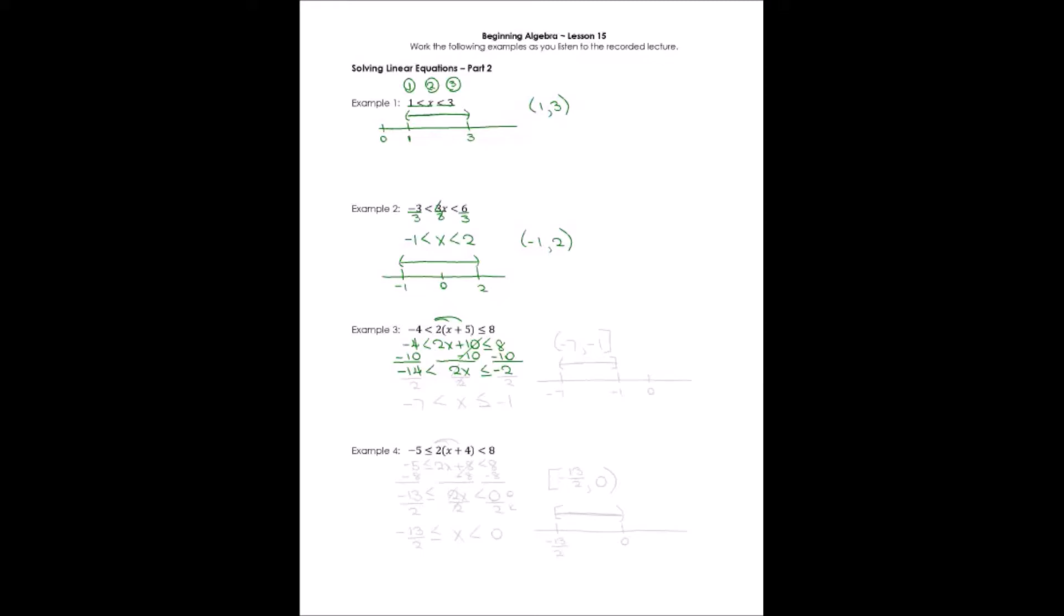I will now look back to my variable term to decide what to do next. Two is multiplied times x. I have to divide by the coefficient. I have to do that all three sides. It cancels my twos. In the middle, I have just x. Negative fourteen divided by two is negative seven. And over on the right, negative two divided by two is negative one.